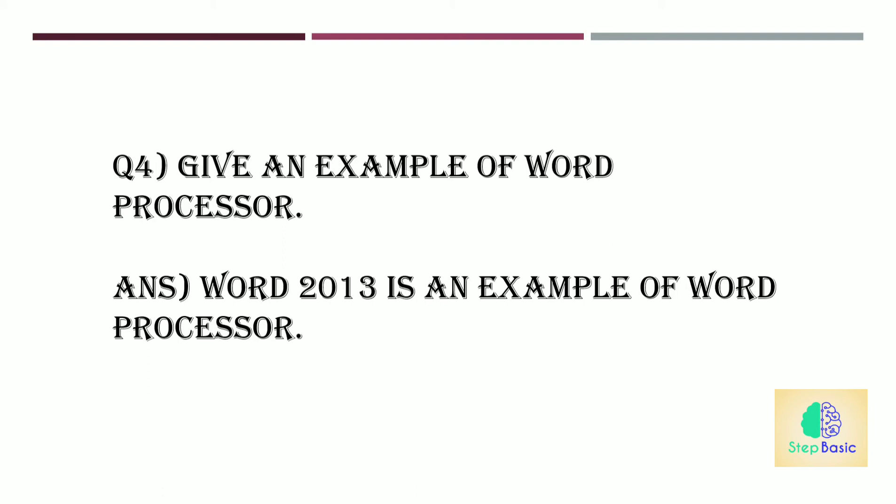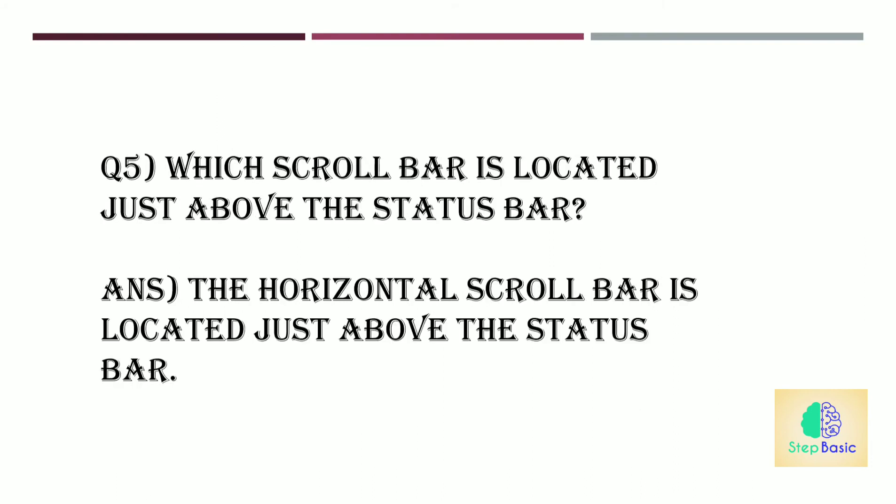Question number 4: Give an example of word processor. The answer is Word 2013 is an example of a word processor. Question number 5: Which scroll bar is located just above the status bar? The answer is the horizontal scroll bar is located just above the status bar.